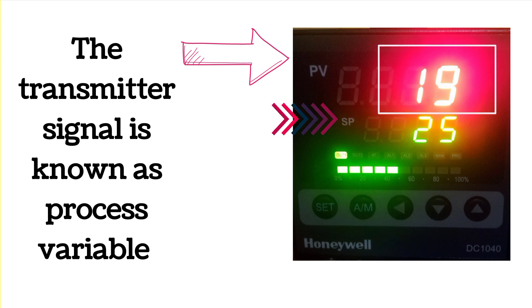Set point is also shown by the arrow and the set point is 25 kg per centimeter square. Set point is the set value for the pressure.